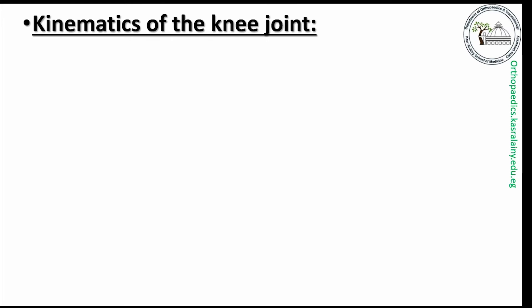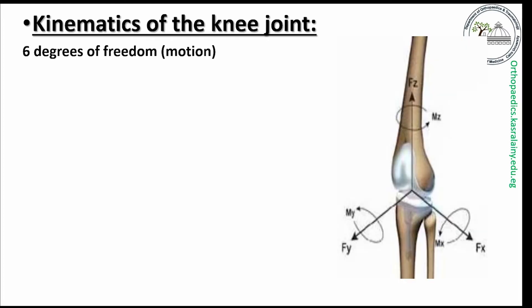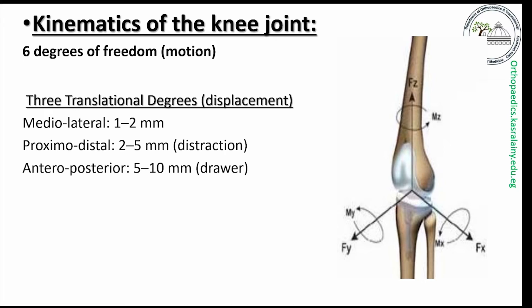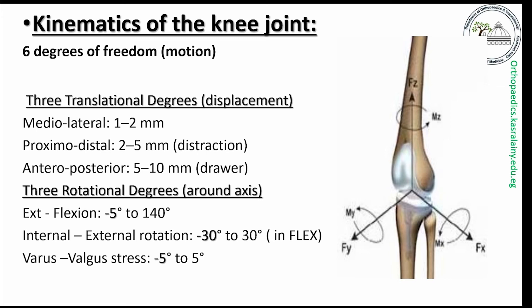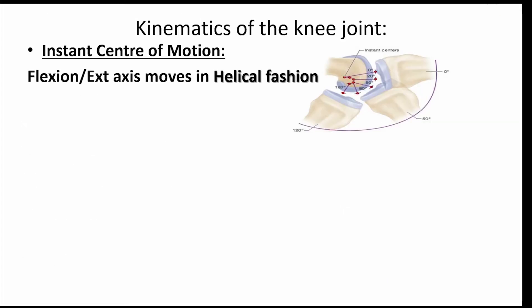Regarding the kinematics of the knee joint: the knee is a modified hinge joint with 6 degrees of freedom — 6 directions of motion: 3 translational motions of medial-lateral, proximal-distal, and anteroposterior drawer motions; and 3 rotational motions around axes for flexion-extension, internal-external rotation, and varus-valgus motions. For flexion-extension movement, the axis of rotation is helical in shape and not a fixed point.